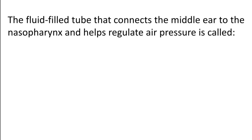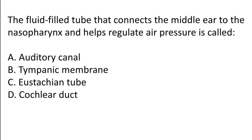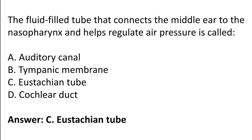The fluid-filled tube that connects the middle ear to the nasopharynx and helps regulate air pressure is called: auditory canal, tympanic membrane, Eustachian tube, cochlear duct. The correct answer is option C — it is called the Eustachian tube.